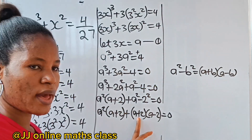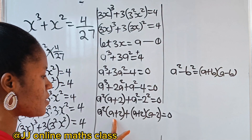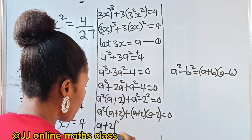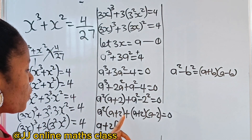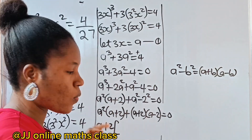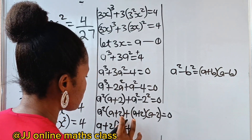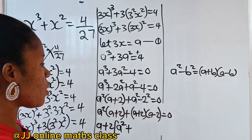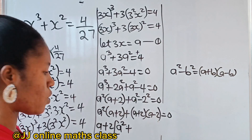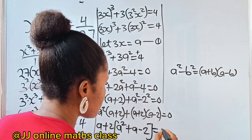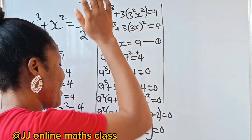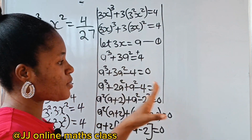So we have a²(a + 2) plus (a + 2)(a − 2) equals zero. Now notice that (a + 2) is a common factor in both terms. Factoring (a + 2) out, we get (a + 2)(a² + a − 2) equals zero.